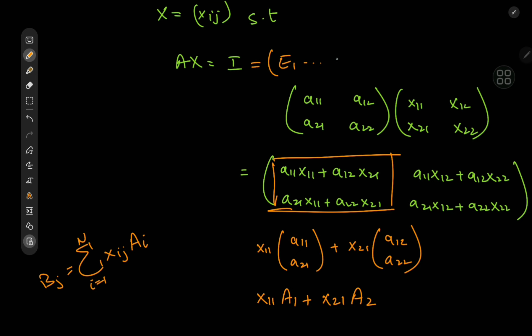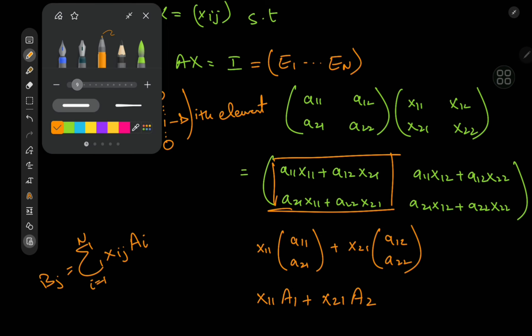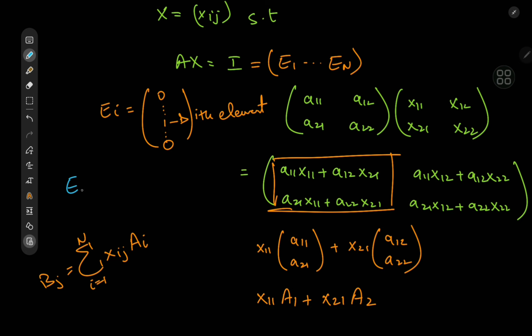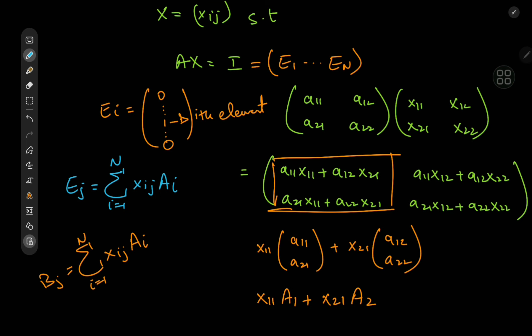We can extend this to the general case: the sum over i from 1 to n of xij times the column vectors Ai gives us the j-th column of the product matrix B. For the identity matrix, the column vectors are just the unit vectors E1 through En, where Ei has zeros everywhere except for the i-th element, which is 1. This gives us a series of vector equations: for each Ej, that vector equals the sum from i equals 1 to n of xij times Ai. With n vector equations and n×n variables, we can solve this using Cramer's rule.